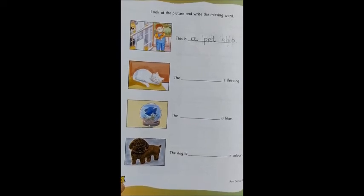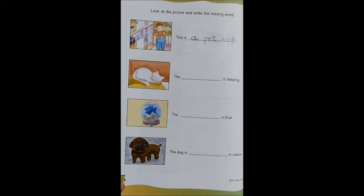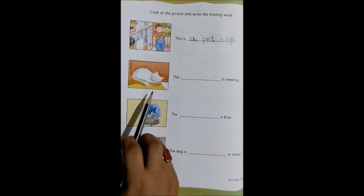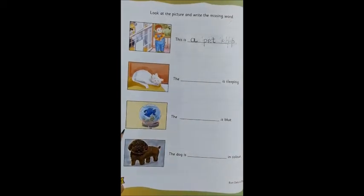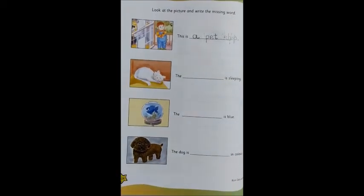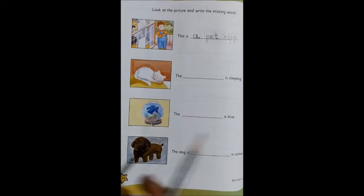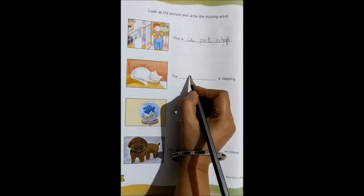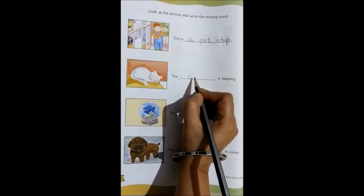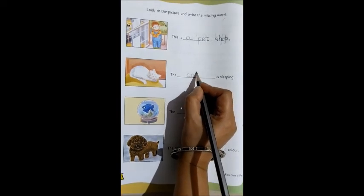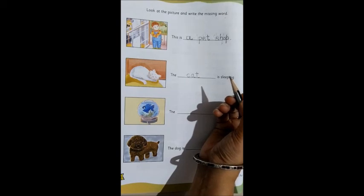Now, moving on to the next one. The dash is sleeping. Can you see in the picture? Who is sleeping? Yes, the cat. So, what will we write? C, A, and a T, cat. Right, children?